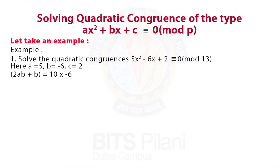So, if we take 2ax + b as y, we get y² ≡ -4 (mod 13), or y² ≡ 9 (mod 13).